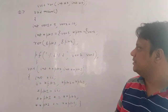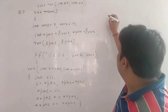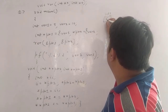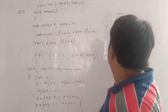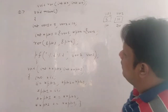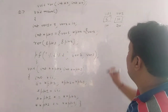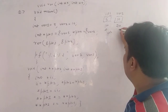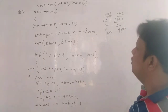Hi guys, moving on to the next question. void main: int var1 is equal to 5, so we have a variable var1 with value 5, and var2 with value 10. Let's suppose the address of var1 is 100 and var2 is 200. int *ptr1 is equal to address of var1, meaning ptr1 is pointing at 100, and ptr2 is pointing at 200.